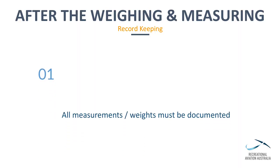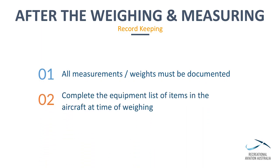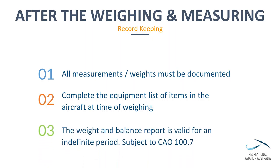Ensure all pages of the weighing summary are complete, including the equipment list of items on board the aircraft at the time of weighing. The weight and balance report is valid for an indefinite period, subject to Civil Aviation Order 100.7. The aircraft will need to be re-weighed if the aircraft's empty weight has changed by more than 0.5% of the aircraft's maximum take-off weight or 10kgs, whichever is the greater — therefore, for REL's aircraft, it is 10kgs. Furthermore, if the empty weight centre of gravity has changed by more than 2% of the maximum permissible centre of gravity range, or 5mm, whichever is the greater, the aircraft will need to be re-weighed.